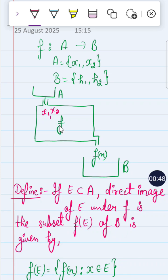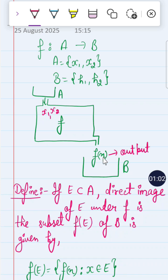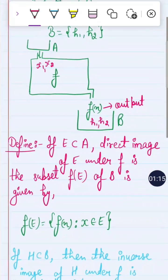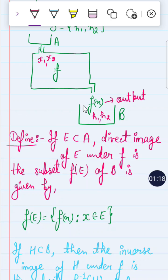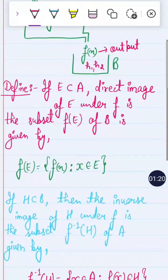The machine works by applying a function — it could be bijective, injective, or any other type. The output is f(x), which lands in B, where h1 and h2 already exist. So f(x) is contained in B. This is how a function works.